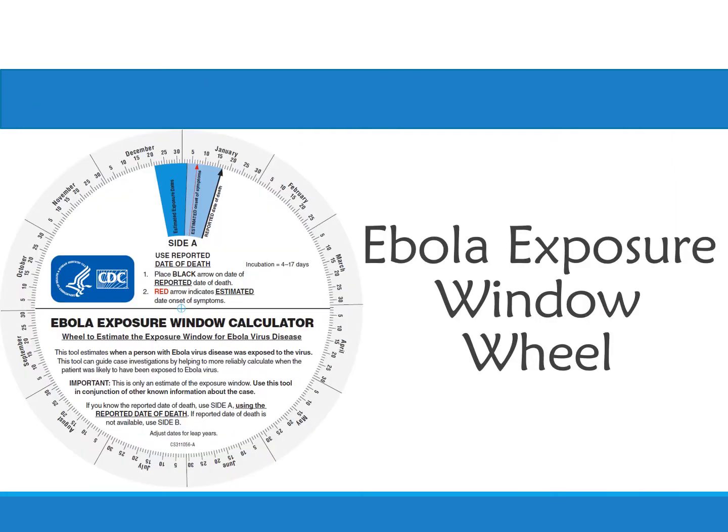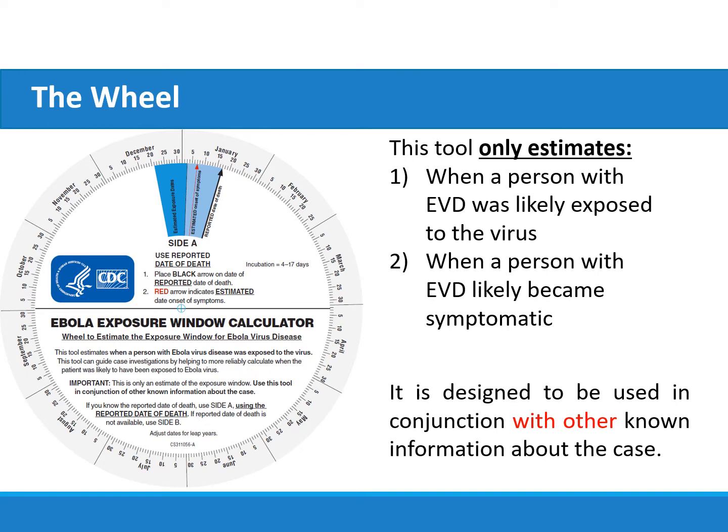In order to overcome some of these challenges, the Ebola exposure window wheel was developed to make it easier to calculate exposure windows in rural environments. Like the phone application, this tool estimates the period during which a person may have been exposed to EVD. It can be used to guide investigations by estimating when a person with EVD was likely exposed to the virus and when they likely became symptomatic.